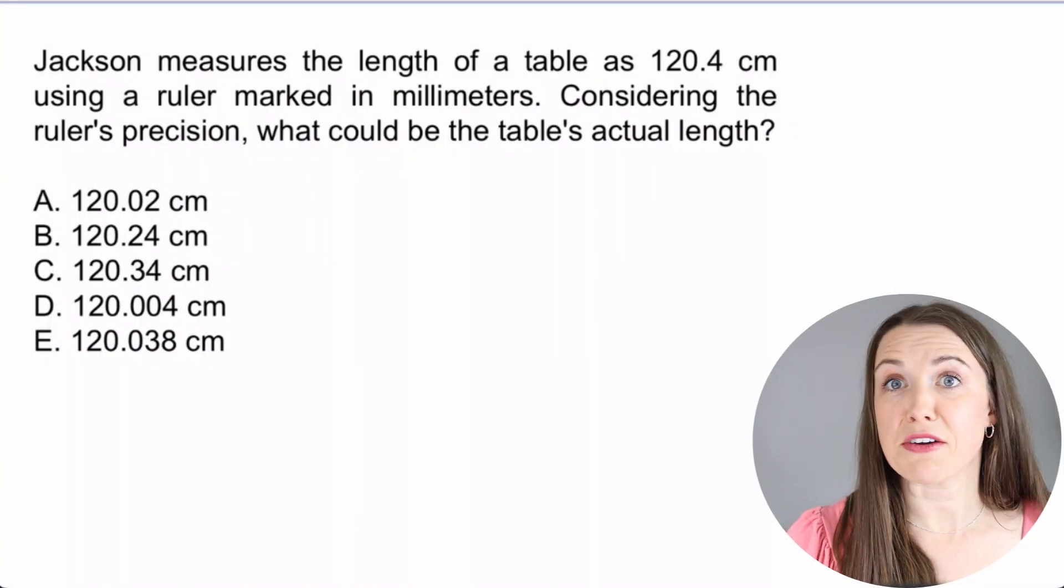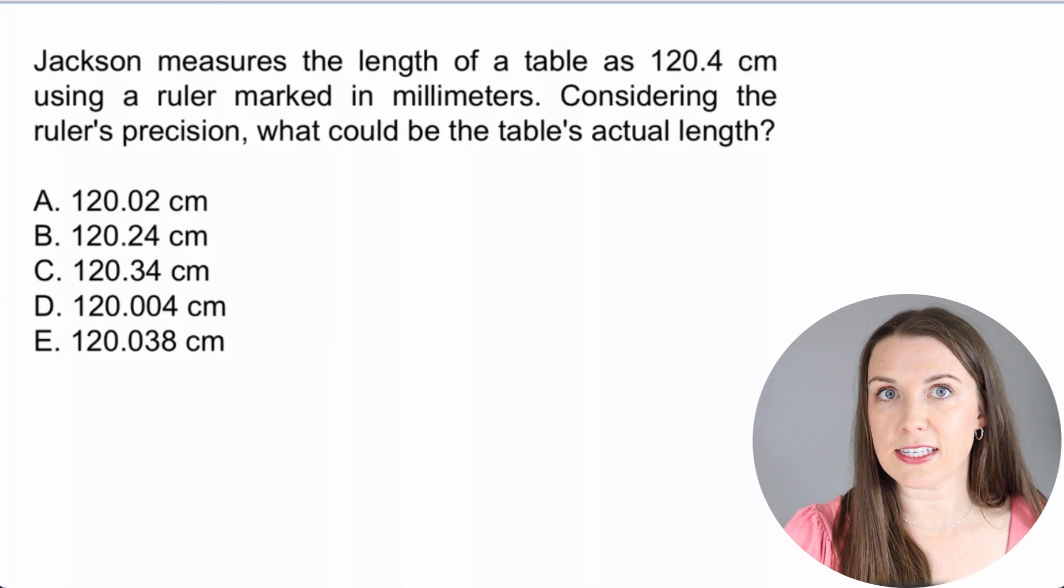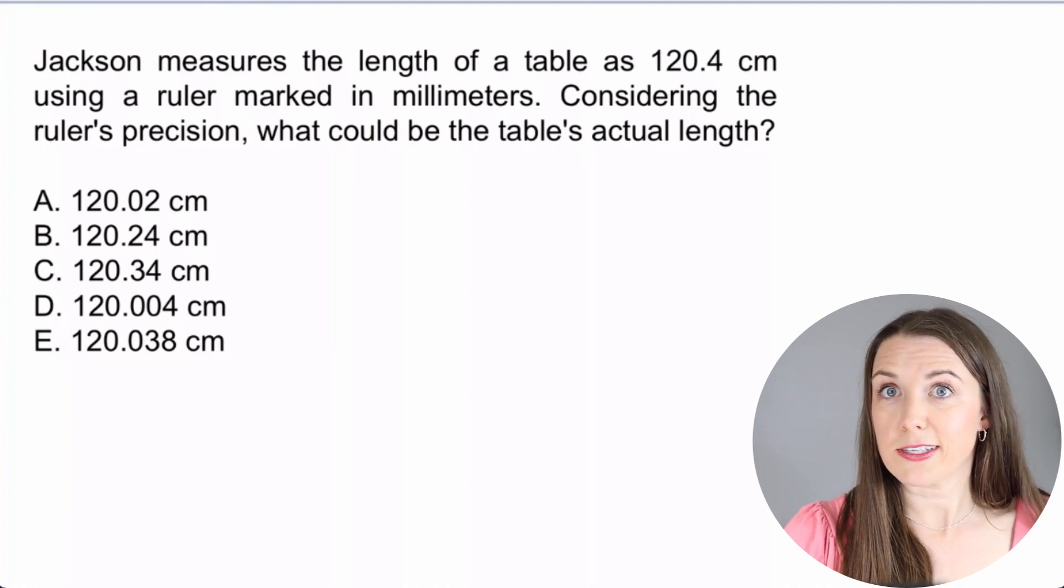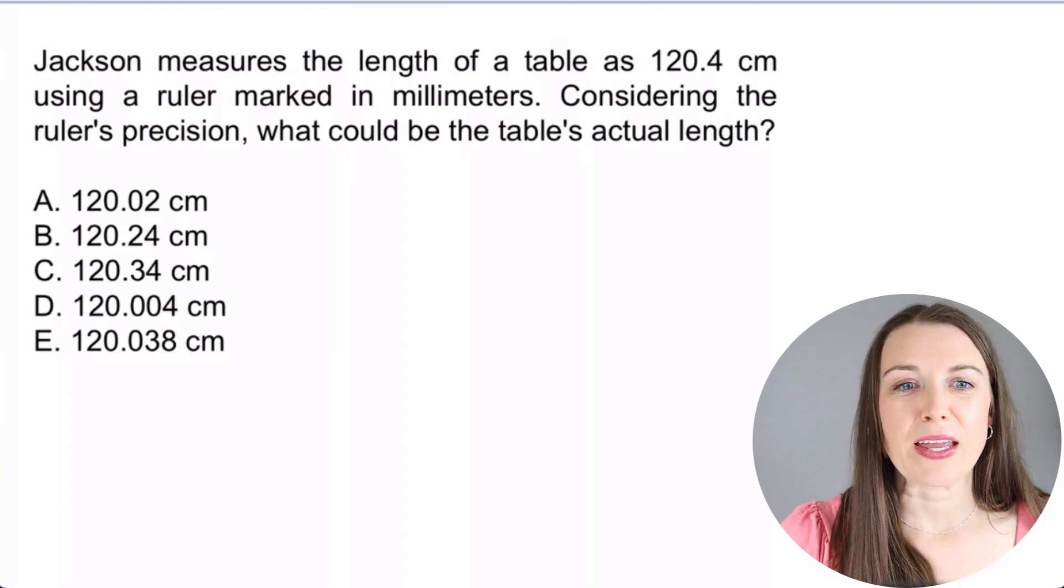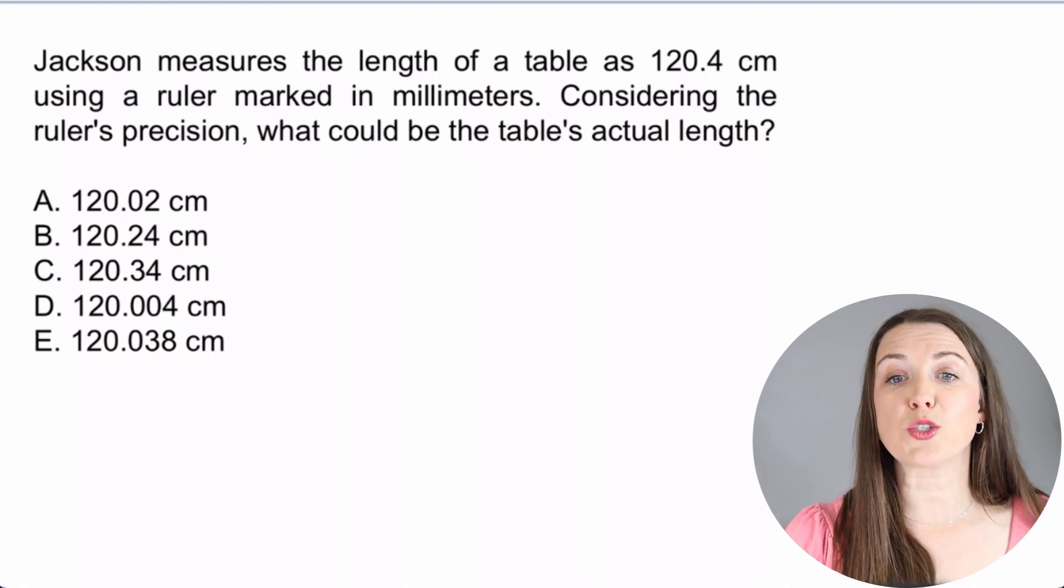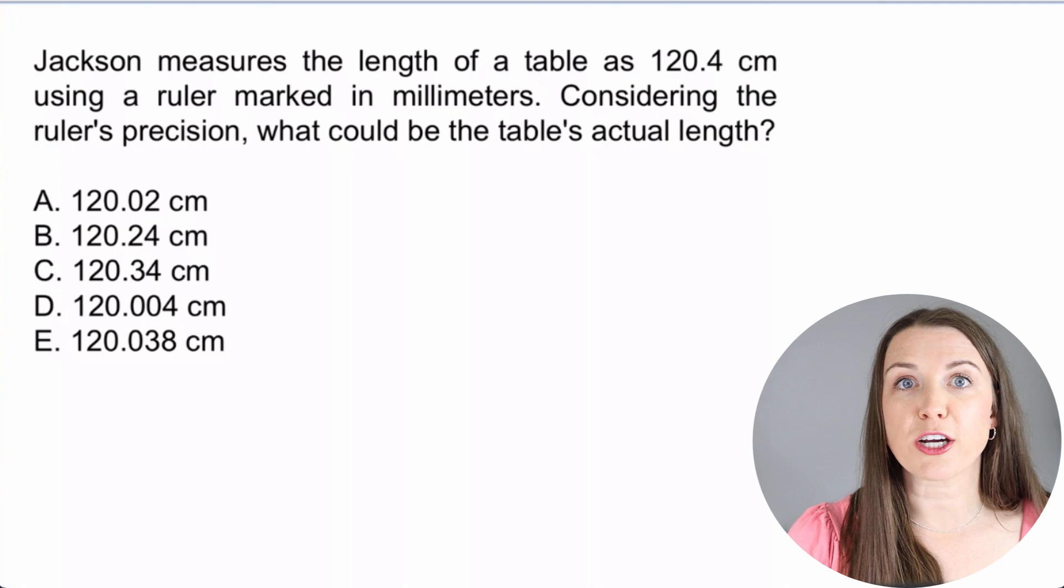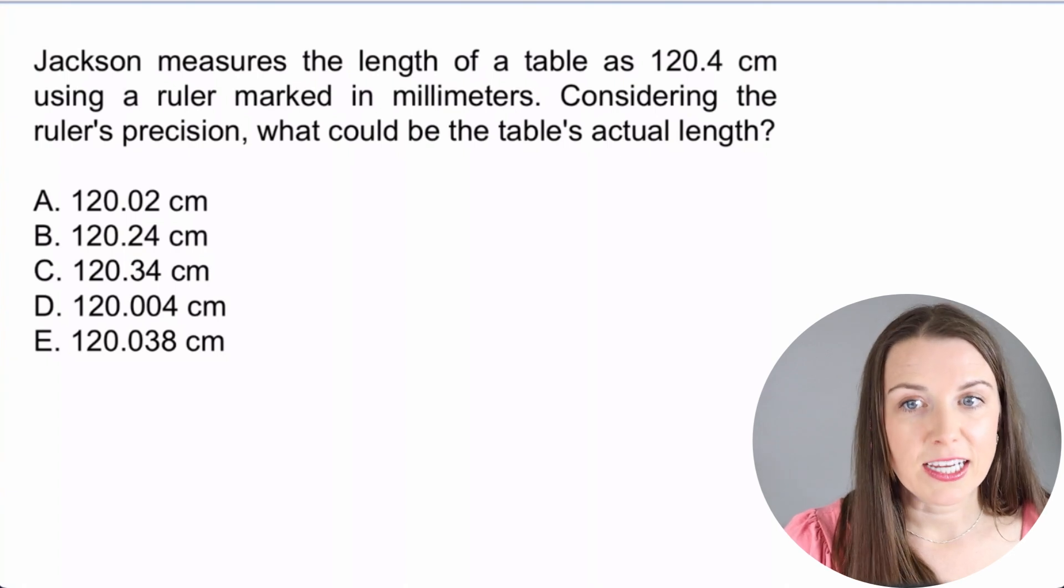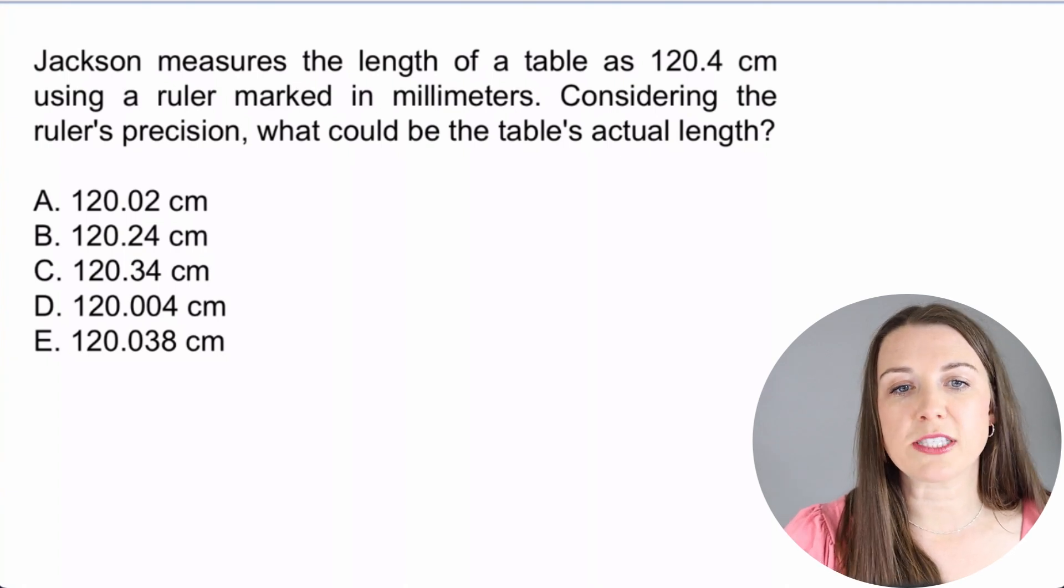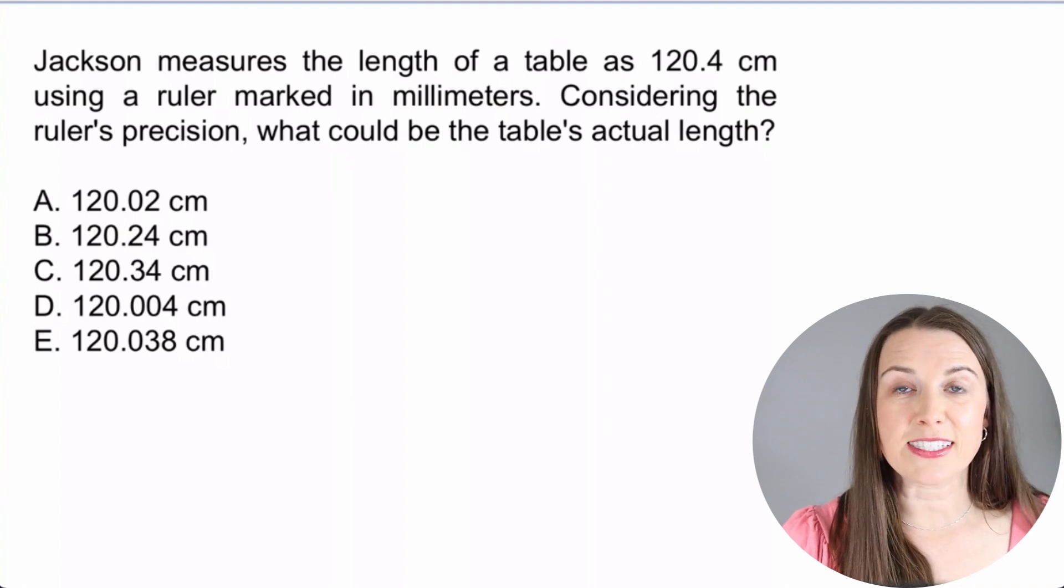Now, if you had a good understanding of the one we just did, the next two should actually be fairly easy for you because we're just kind of rounding a little bit. Jackson measured the length of a table at 120.4 centimeters using a ruler marked in millimeters. Considering the ruler's precision, what would be the table's actual length?